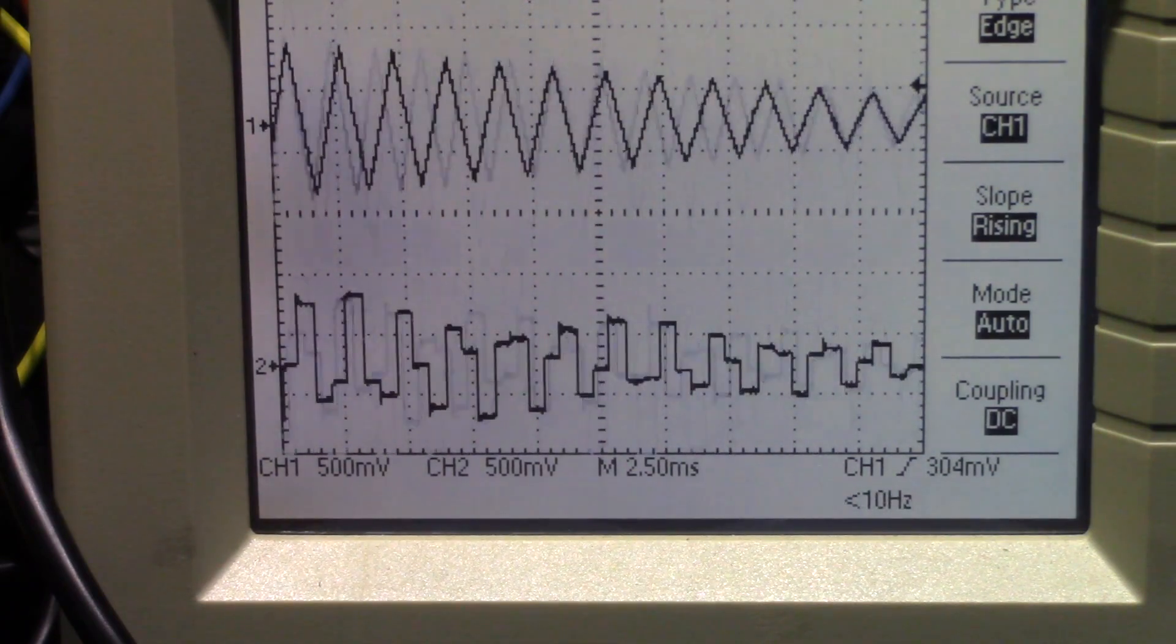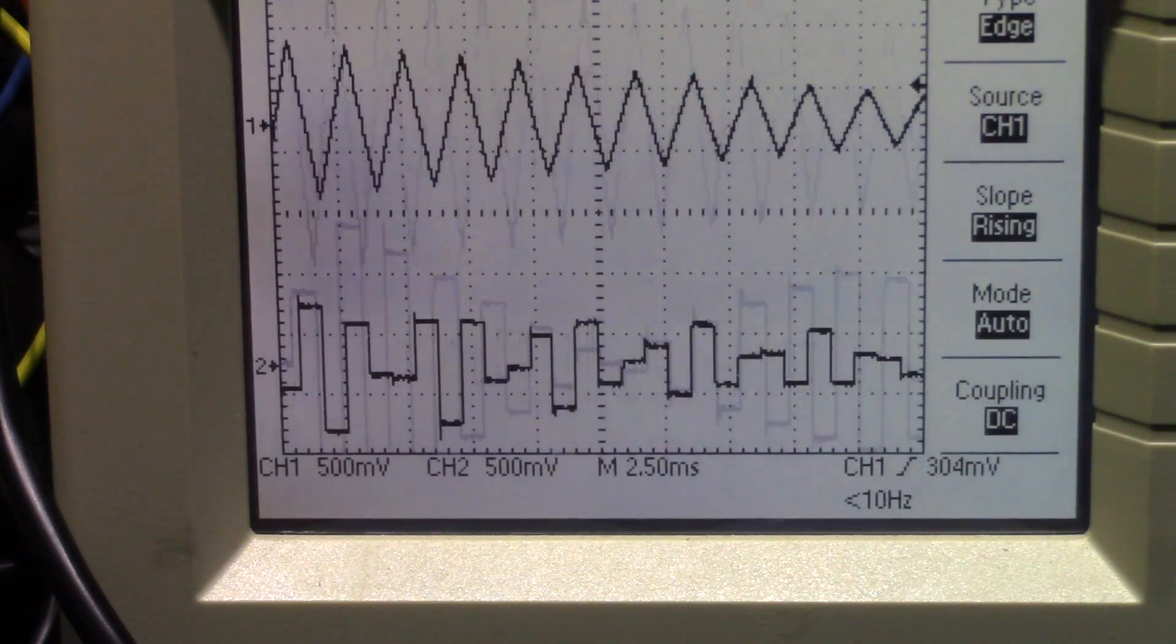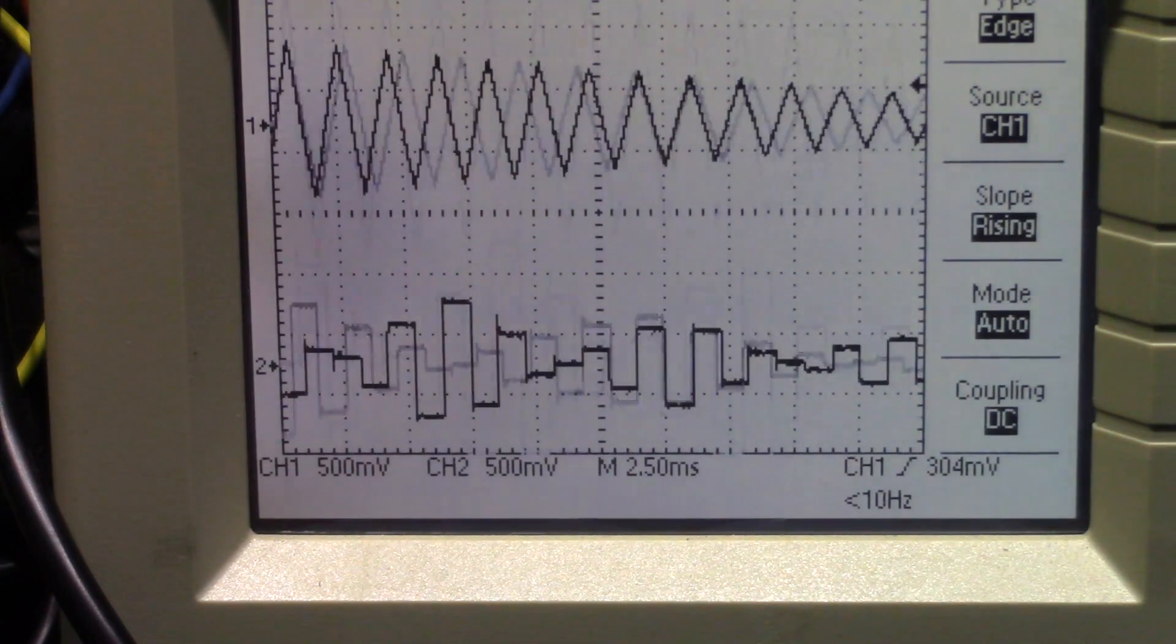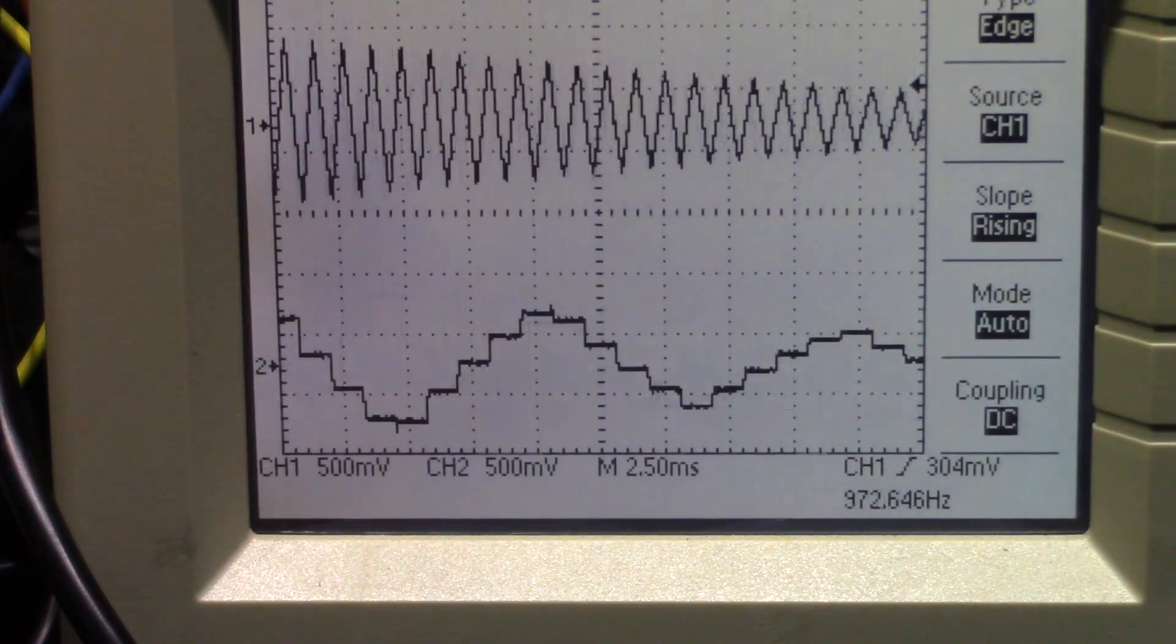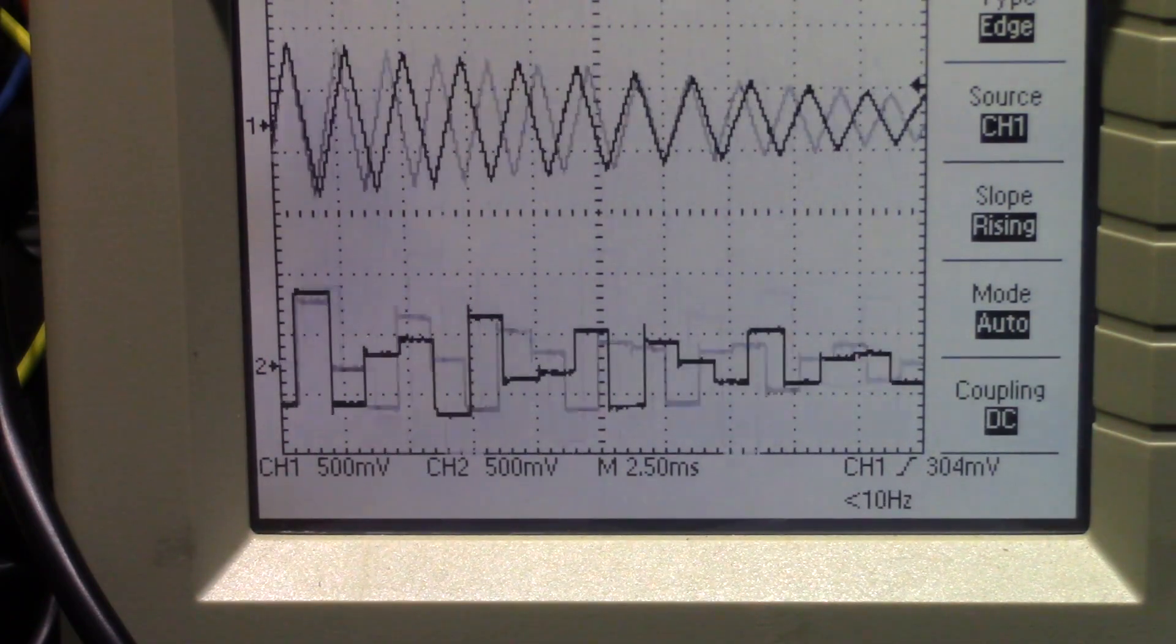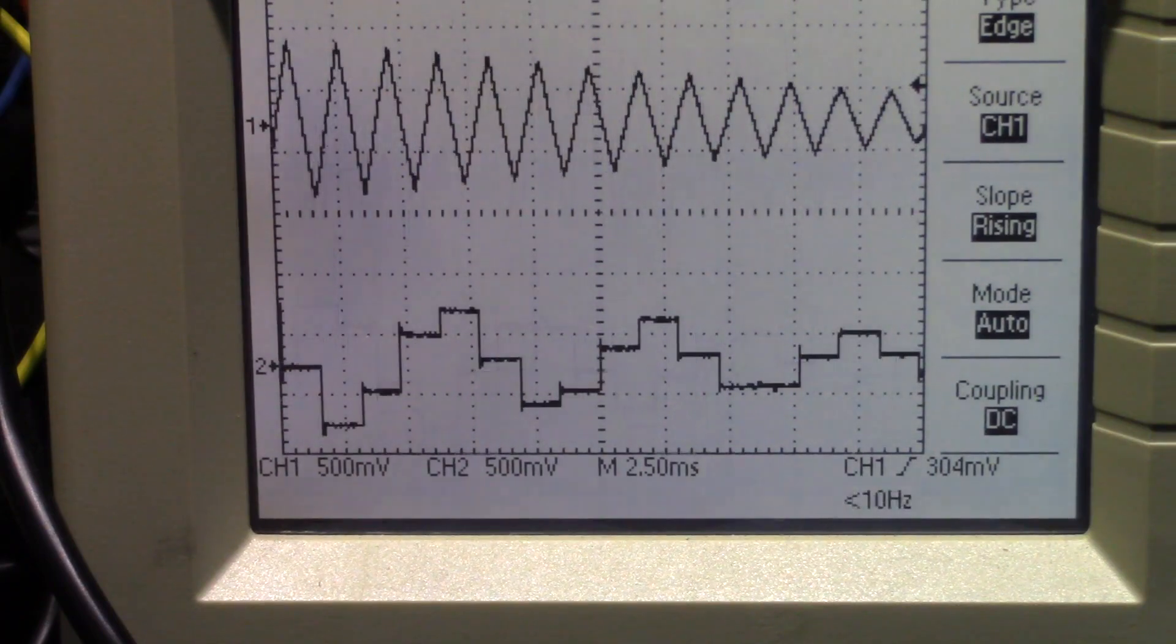At a high sample rate, it sounds almost identical to the input signal, but as we lower the sample rate, the effect becomes more evident. We can go really low for some extra distorted sound.